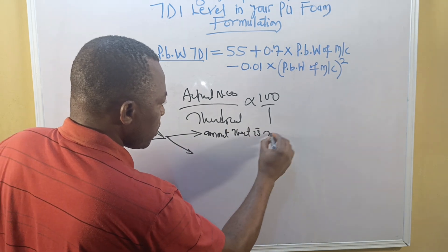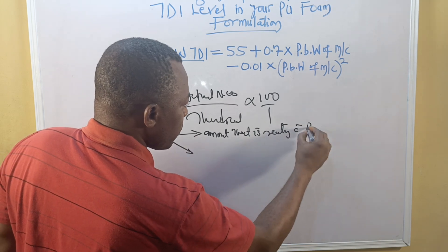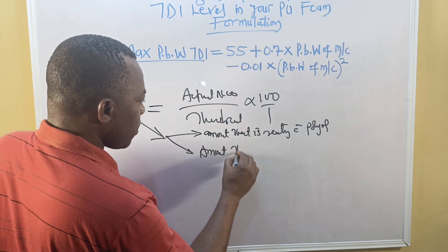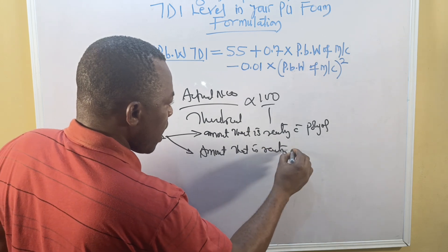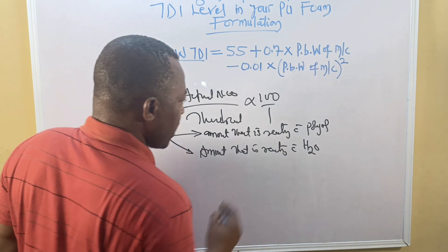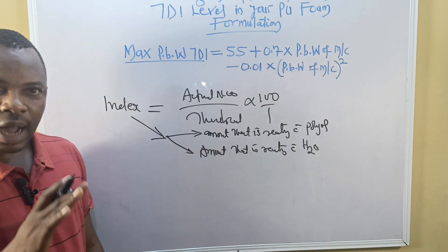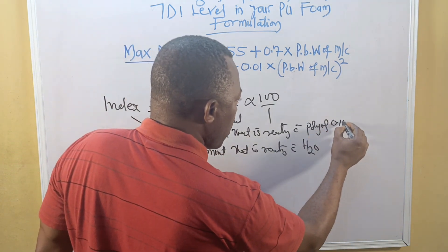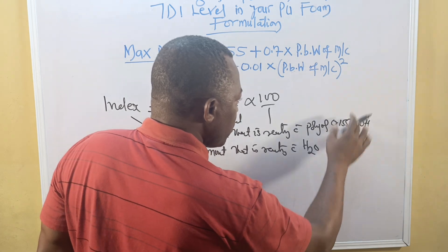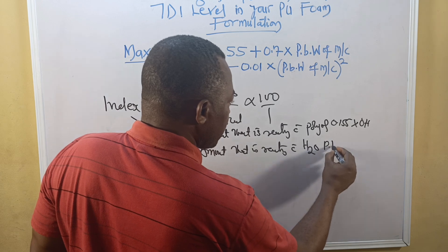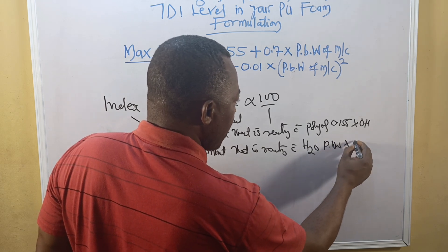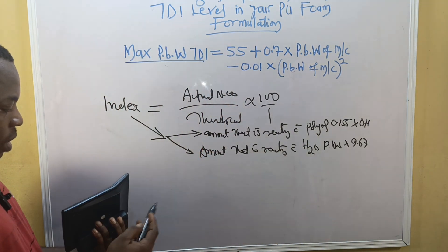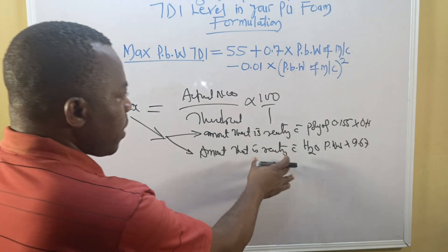Therefore, TDI consumes in two ways: the amount that is reacting with the polyol and the amount reacting with water. The equivalent for polyol is 0.155 times the OH value of that polyol.